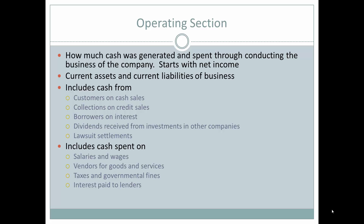The Operating Section covers how much cash was generated and spent through conducting the business of the company. It starts with net income, and current assets and current liabilities are also considered. It includes cash from sales, collections from customers on cash and credit sales, interest received from borrowers, dividends received from investments in other companies, and lawsuit settlements.